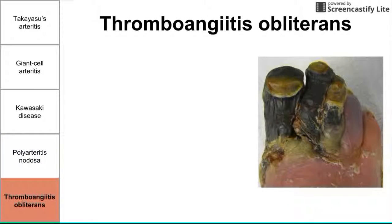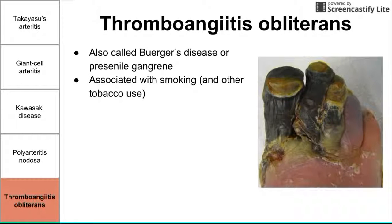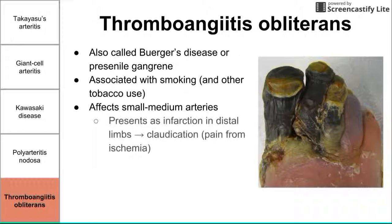The last disease is thromboangiitis obliterans, more commonly known as Buerger's disease. It is characterized by necrosis of the extremities and is heavily related to smoking and other tobacco use. It is idiopathic, but smoking is one of the biggest trends. It affects small to medium arteries, particularly in males, and initially presents as an infarction in the distal limbs, usually causing claudication — pain from ischemia, or lack of oxygen to the distal tissues.